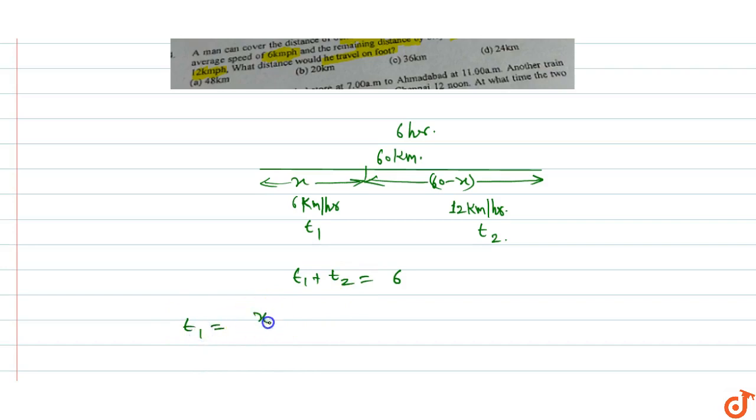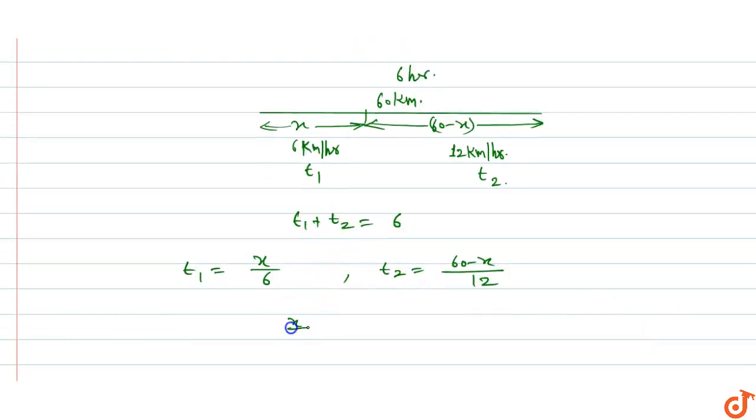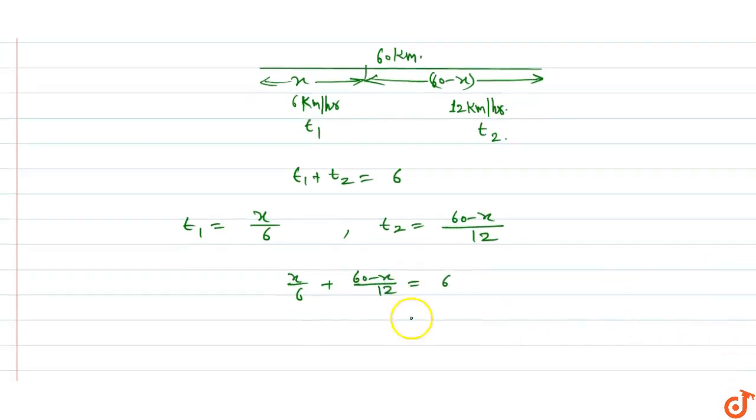t2 value is distance 16 minus x upon speed 12. So putting t1 and t2 values in the equation: x by 6 plus 16 minus x by 12 equals to 6.